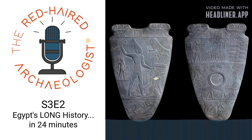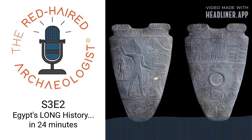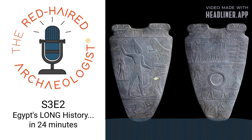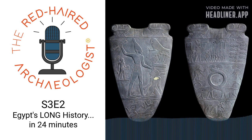Next comes the Second Intermediate Period — running from 1786 to 1567 BCE — and it's going to be incredibly important for us. This is when Egypt, for the first time, succumbs to foreign invaders. Egypt's annals record that a group called the Hyksos came in, conquered Egypt, and ruled for about 100 years before being pushed out. When an Egyptian pharaoh rose again and pushed them out, he drove them north toward Palestine. Who were these Hyksos? Is it possible this is somehow related to Joseph? We don't know — that's something we'll be getting into in later episodes.